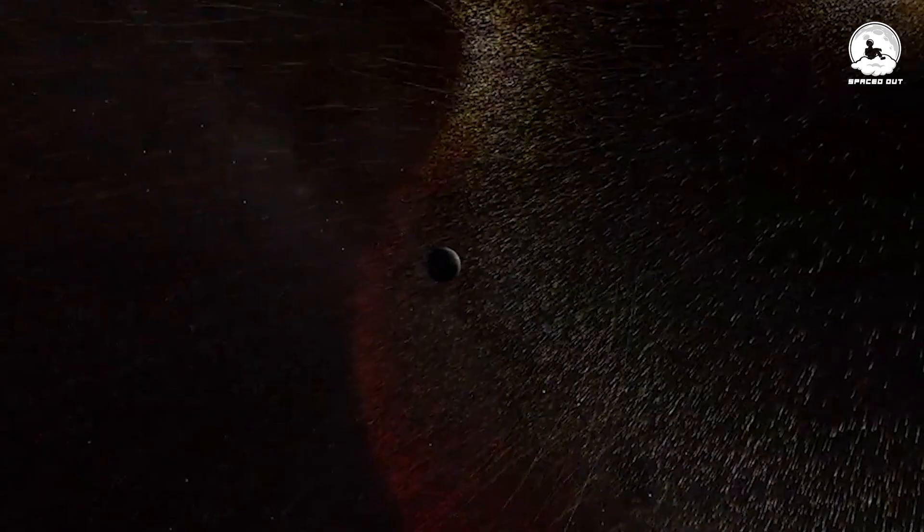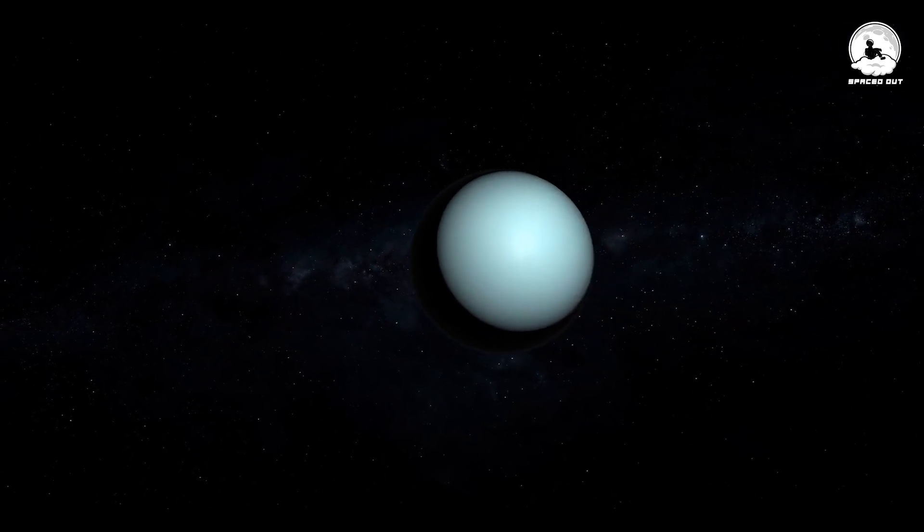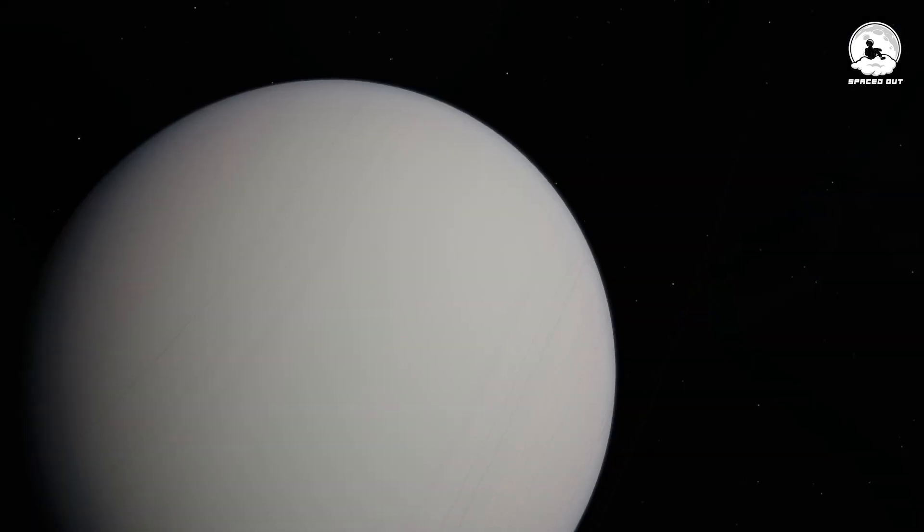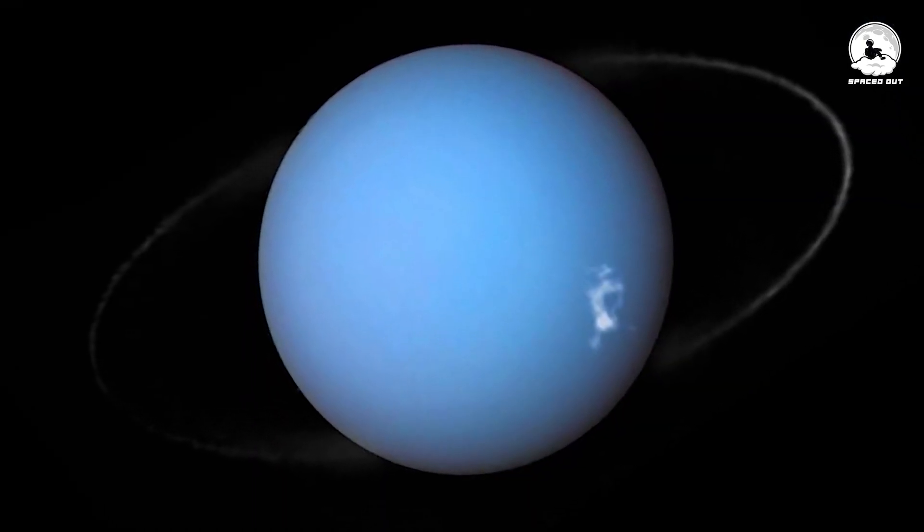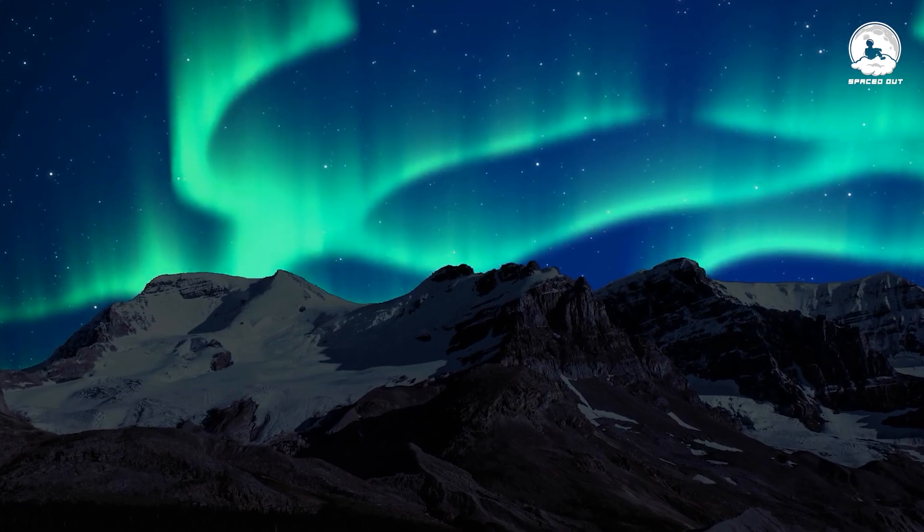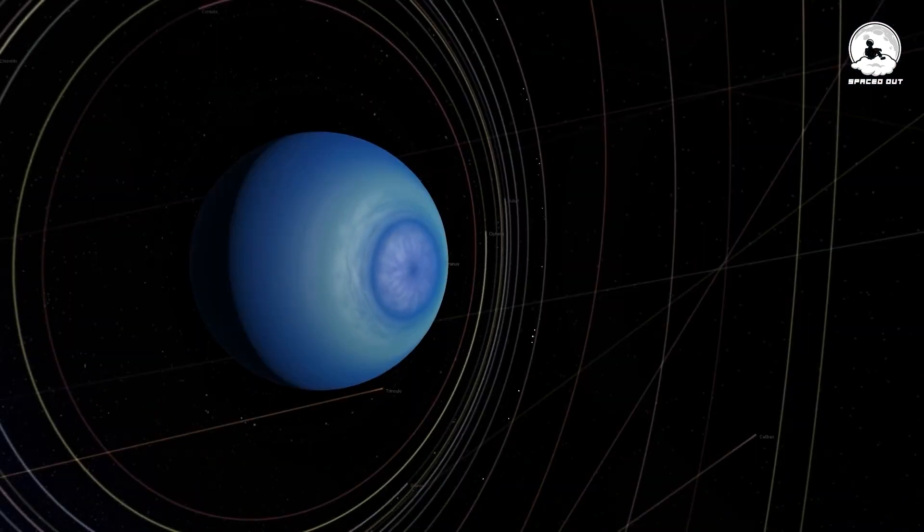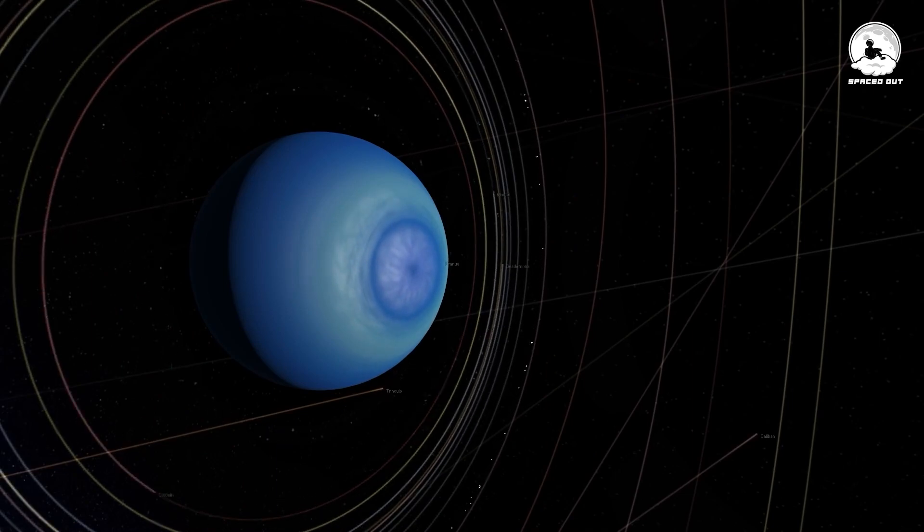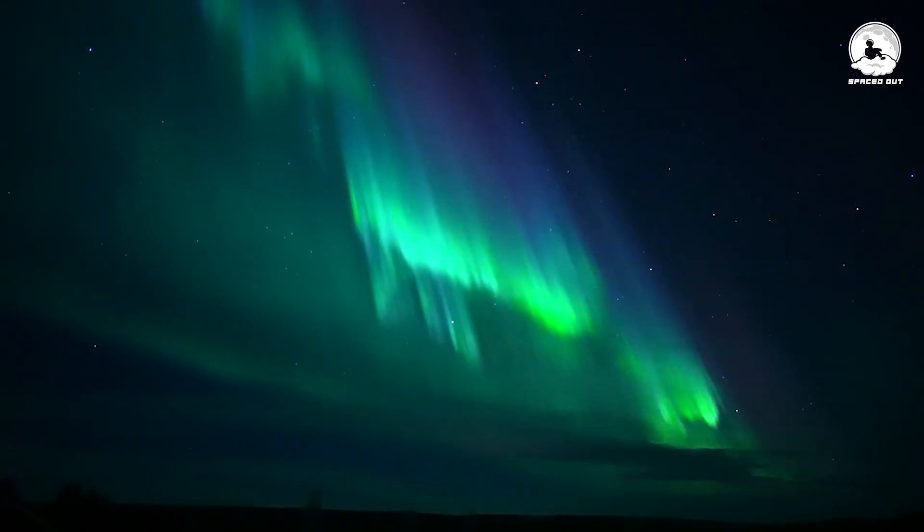Similar to Earth's auroras, driven by the interaction of charged particles from the Sun with our magnetic field, Uranus undergoes a comparable process. Yet, due to its unique atmosphere, mainly composed of hydrogen and helium, Uranus's auroral glow appears in ultraviolet and infrared wavelengths. The hypothesis suggests that the energy produced by these auroras could be responsible for both generating and distributing heat radiating from the auroras down toward Uranus's magnetic equator. In simpler terms, these cosmic light displays could be acting as celestial heaters, challenging the traditional understanding of how planets regulate their temperatures.